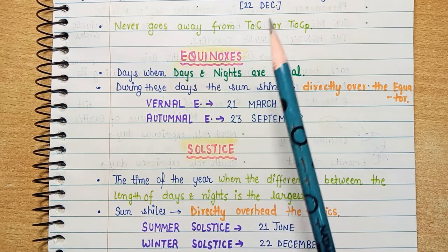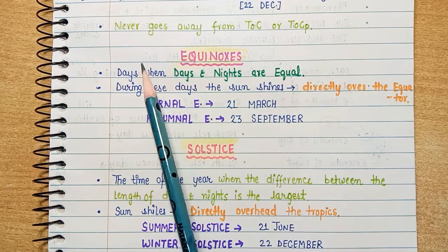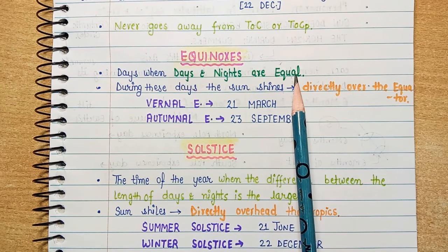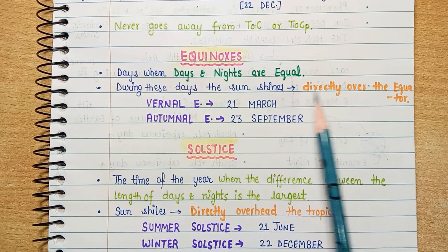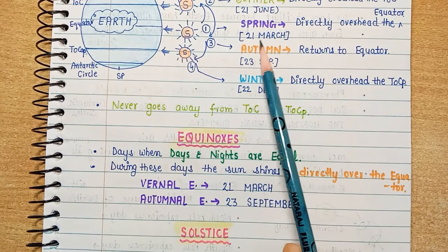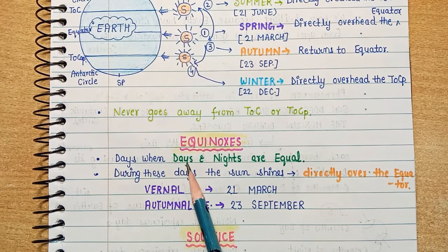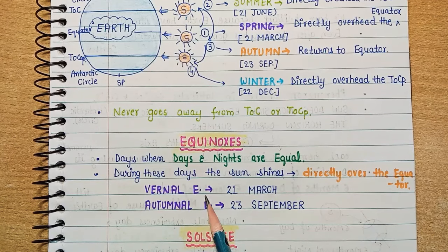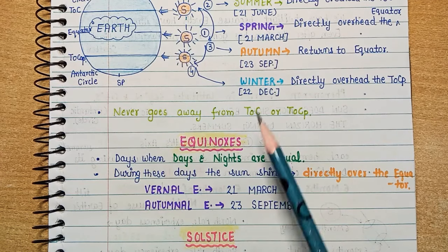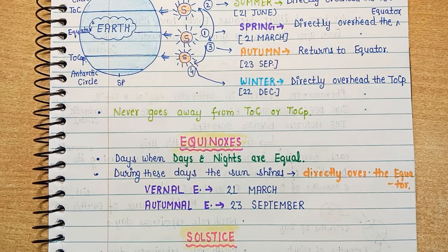Now we will talk about equinoxes. During equinoxes, day and night are equal. So during these days the sun shines directly overhead the equator. These are the days when the sun is exactly above the equator. See, when is the sun over the equator? It is on 21st March and on 23rd September. Just remember these two dates. During both spring and autumn, the sun is near the equator — that is what equinoxes represent. So equinoxes are done.